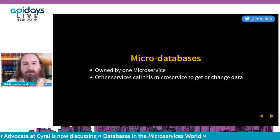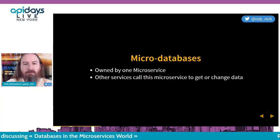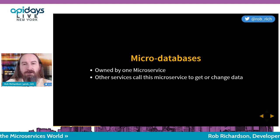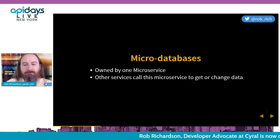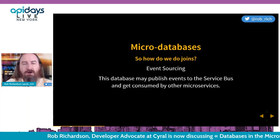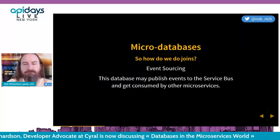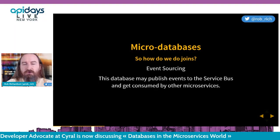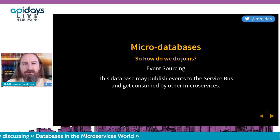A micro database is owned by one microservice. Other services call that microservice to get or change data. So now we may run into a few different problems. How do we do a join? Do I really need to call another microservice for each record in the result set to get additional data?